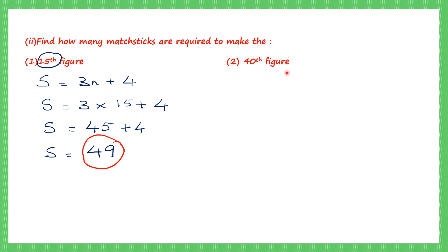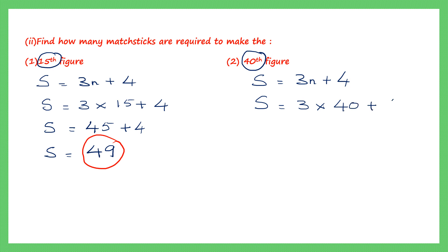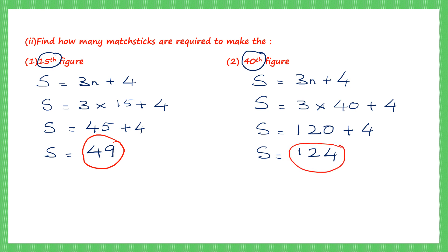How many matchsticks will there be in the 40th figure? Using the formula S = 3n + 4, where n = 40: S = 3×40 + 4 = 120 + 4 = 124. The number of matchsticks in the 40th figure will be 124.